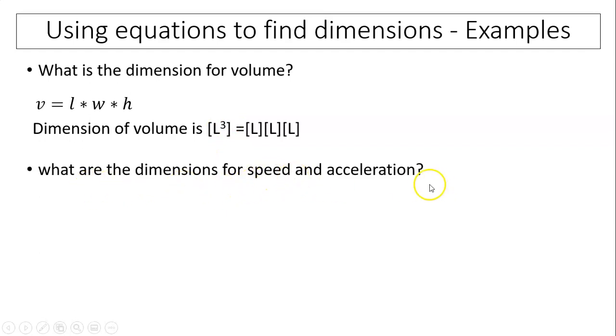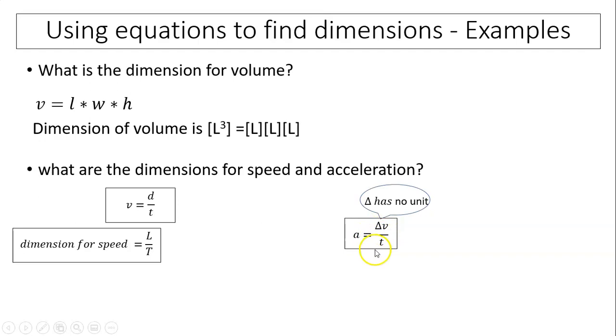What are the dimensions for speed and acceleration? Speed V equals D over T. The dimension for D is length, and dimension of T is time. So dimension of speed is length divided by time. Acceleration is change of velocity over time, which we learned last year. This change has no unit. When you subtract quantities with the same dimensions, you get the same dimension. So it's L over T divided by T, which is L over T squared. That's the dimension of acceleration.